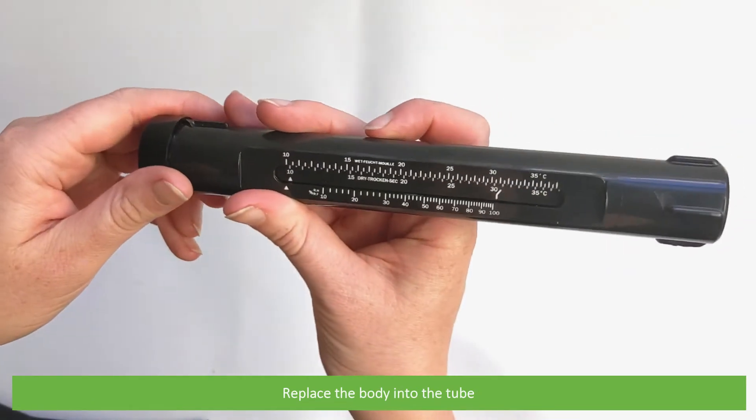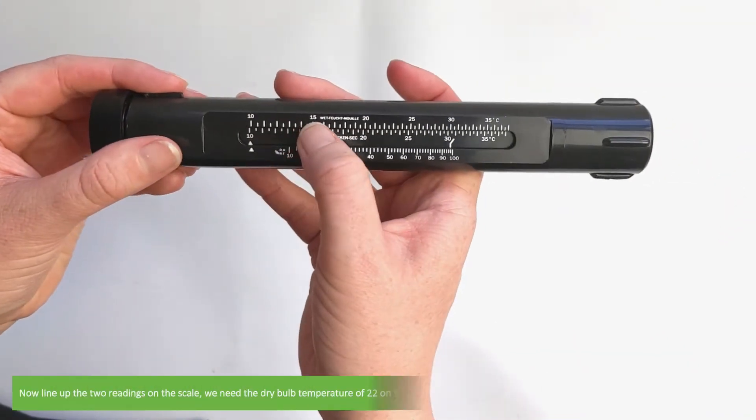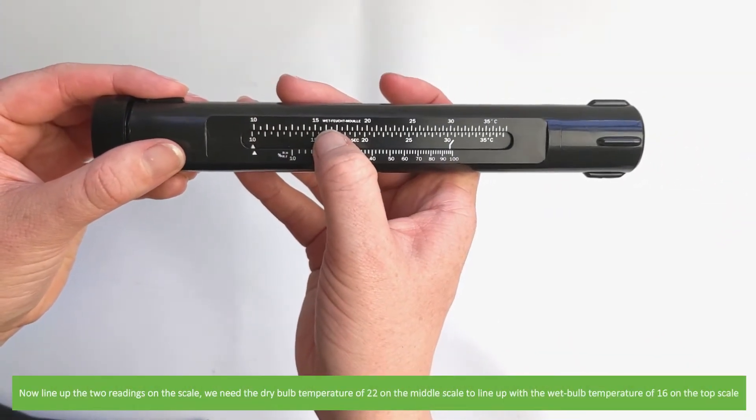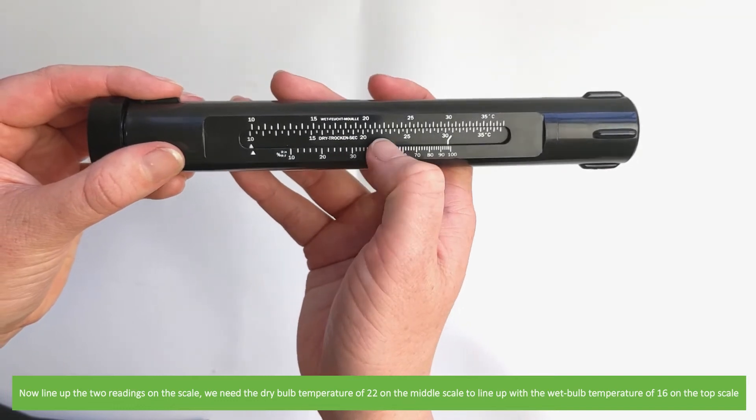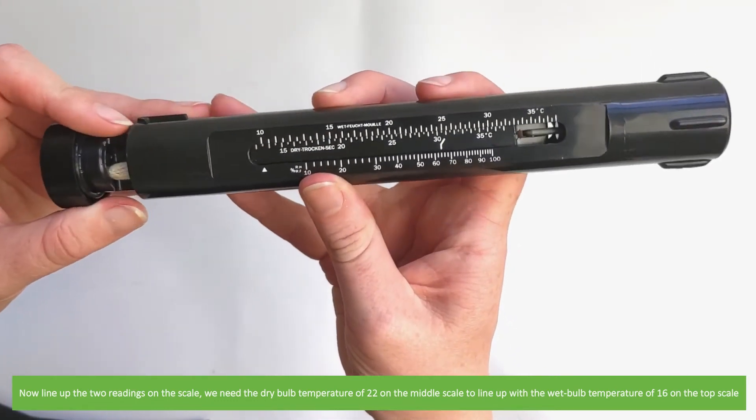Place the body into the tube. Now line up the two readings on the scale. We need the dry bulb temperature of 22 on the middle scale to line up with the wet bulb temperature of 16 on the top scale.